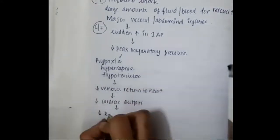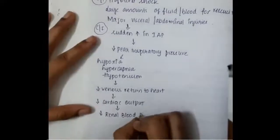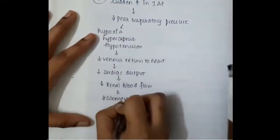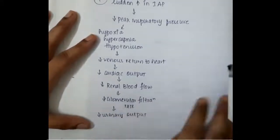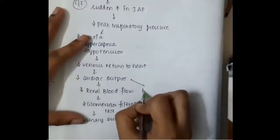Thus decreasing cardiac output decreases the renal blood flow which in turn decreases the glomerular filtration rate which finally decreases the urine output.